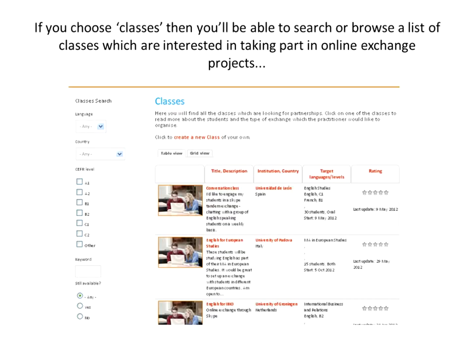Let's have a little look at the classes area. Here you can see examples — this is a huge database with filters on the left-hand side for countries, language, and levels of task. You can browse through the existing classes who are looking for partners, looking for connections, looking for international collaboration. From there, you'll be able to find institutions that may inspire you to add your own class and start looking for collaborators.